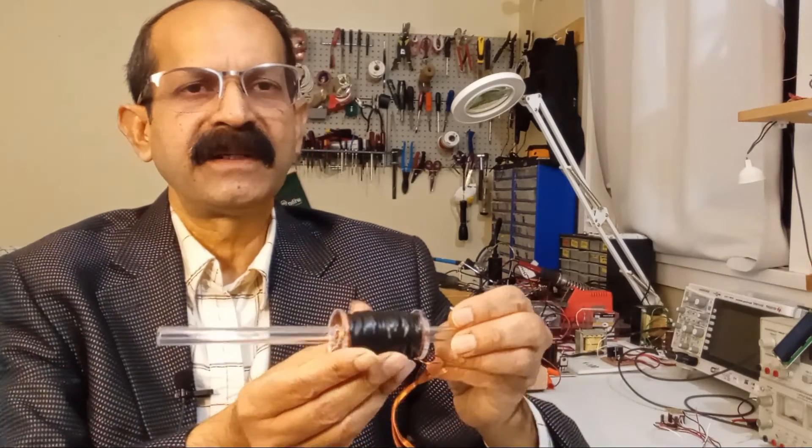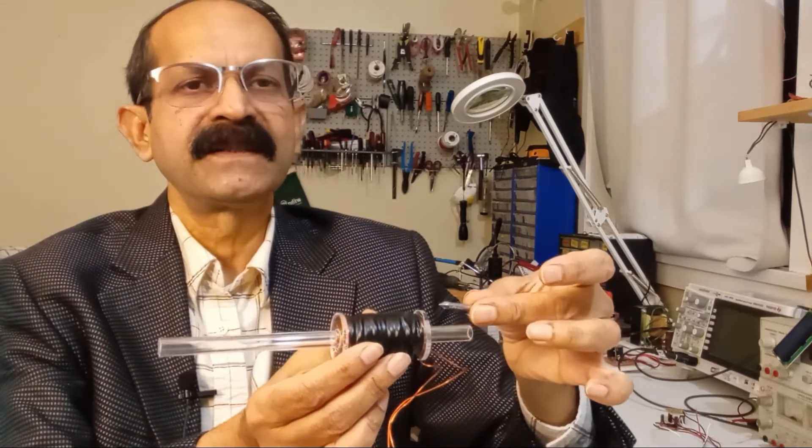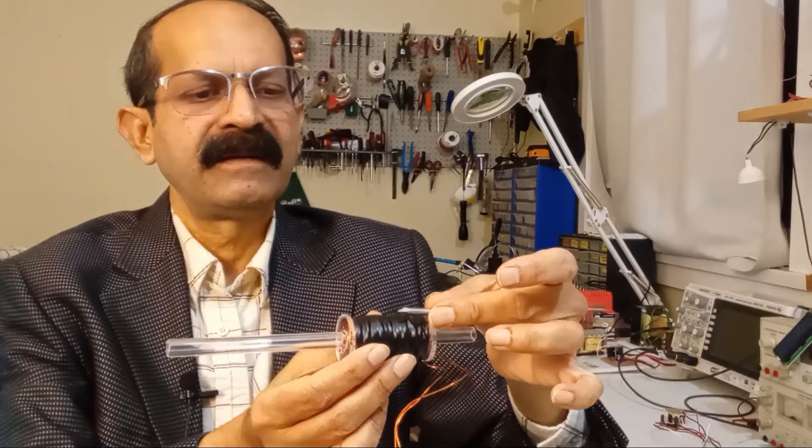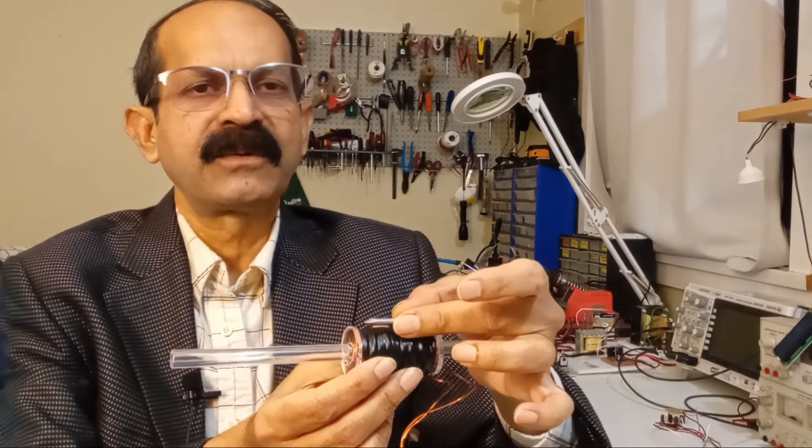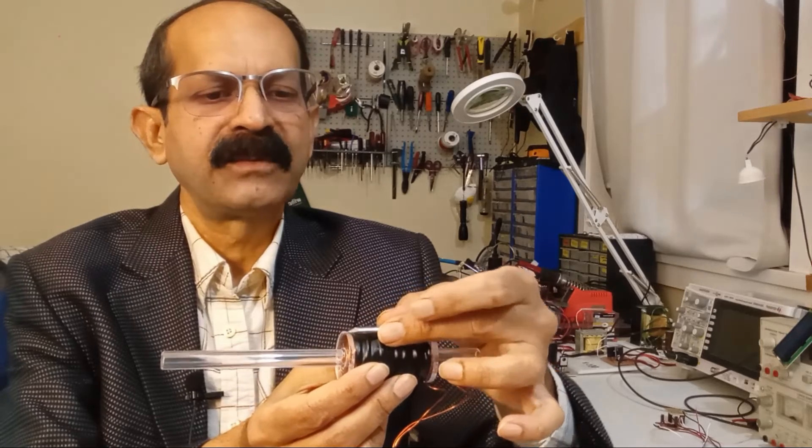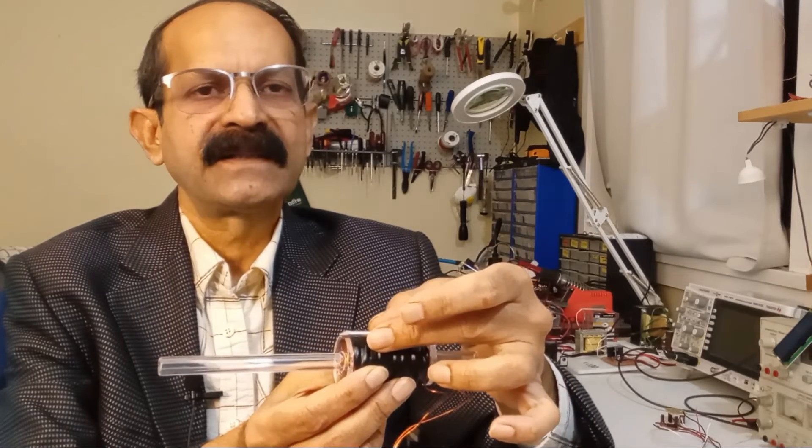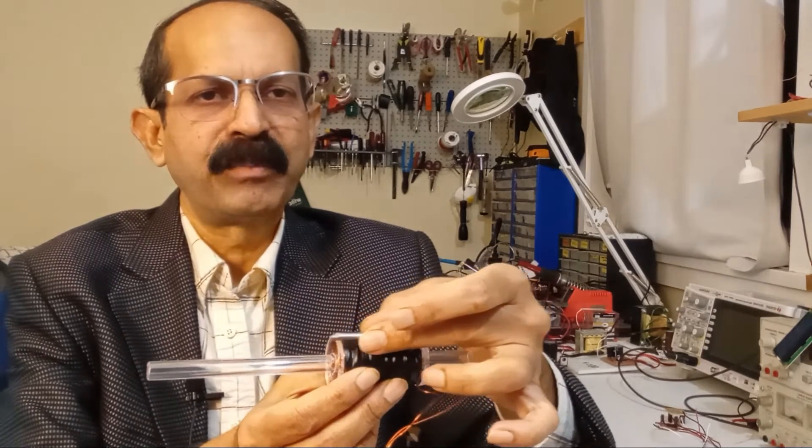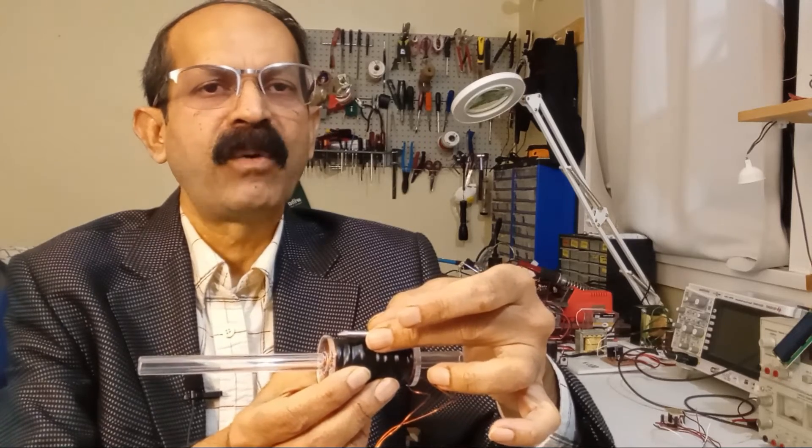So once a coil like this one is energized, the projectile is pulled inside the coil. And once the projectile crosses the center of the coil, the current should be switched off, otherwise the projectile as it proceeds, it is pulled back towards the coil if the on time is longer.